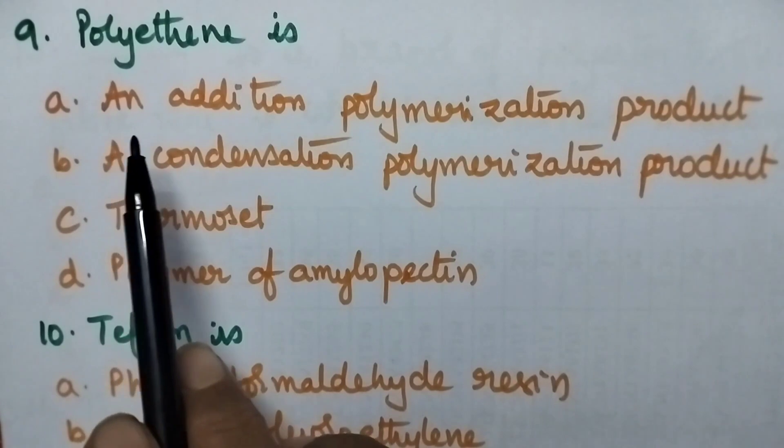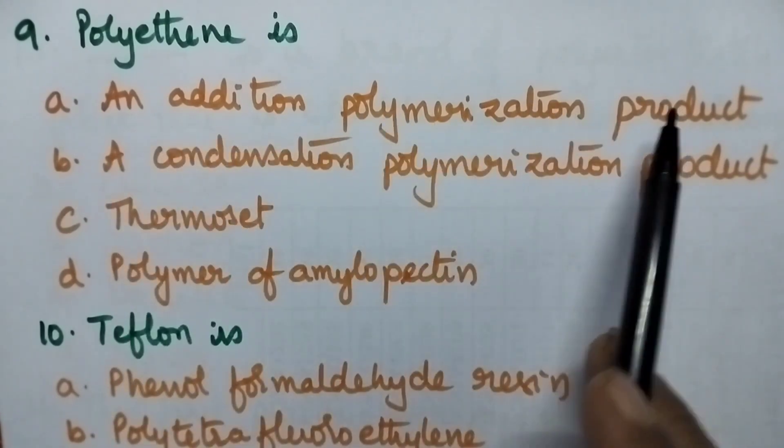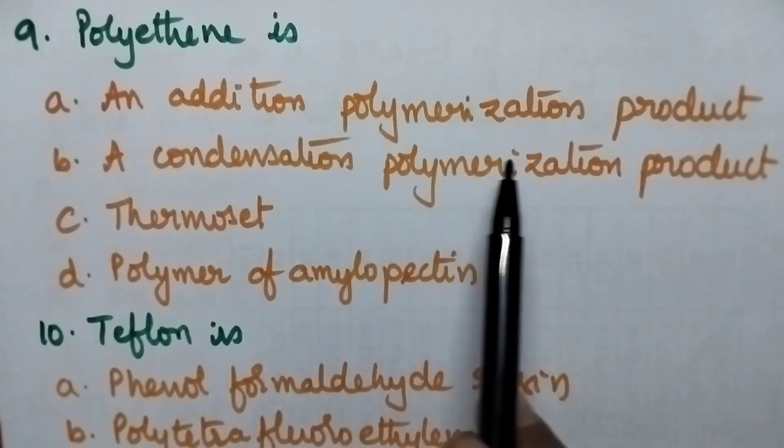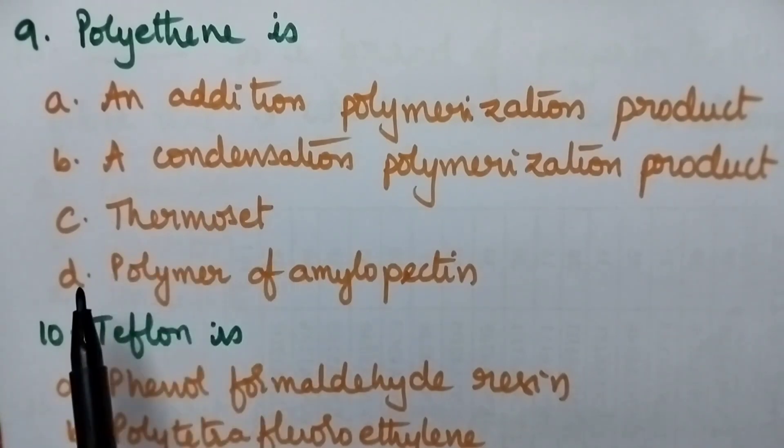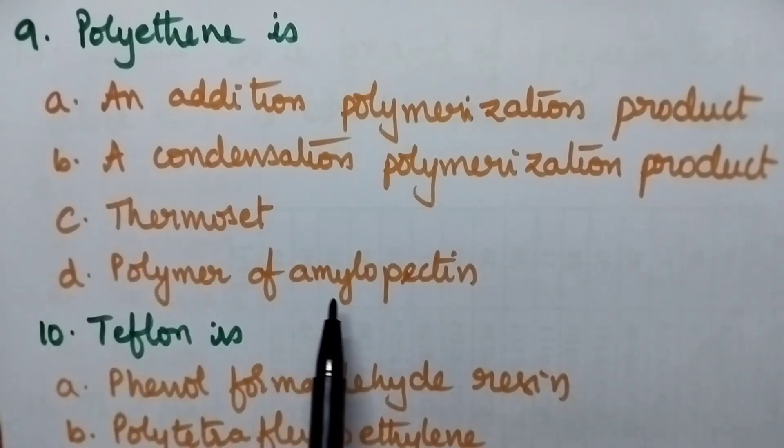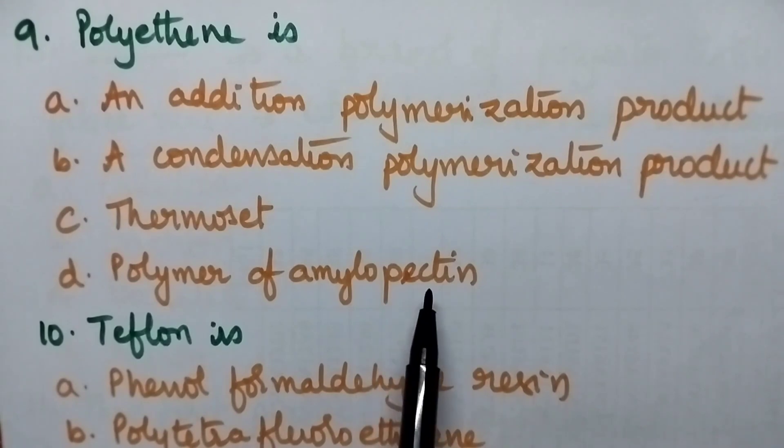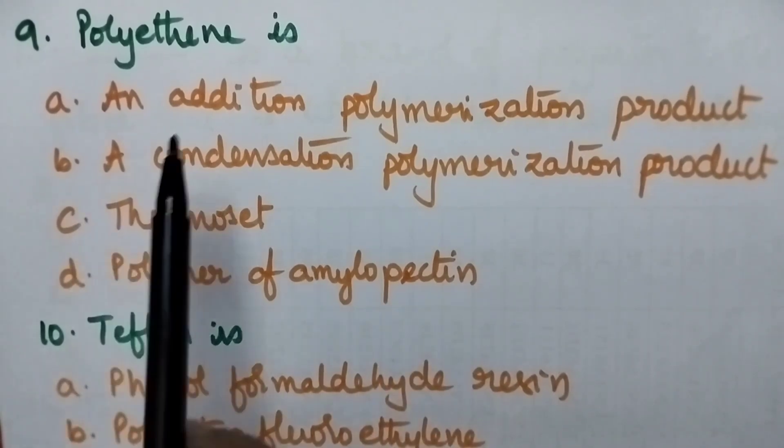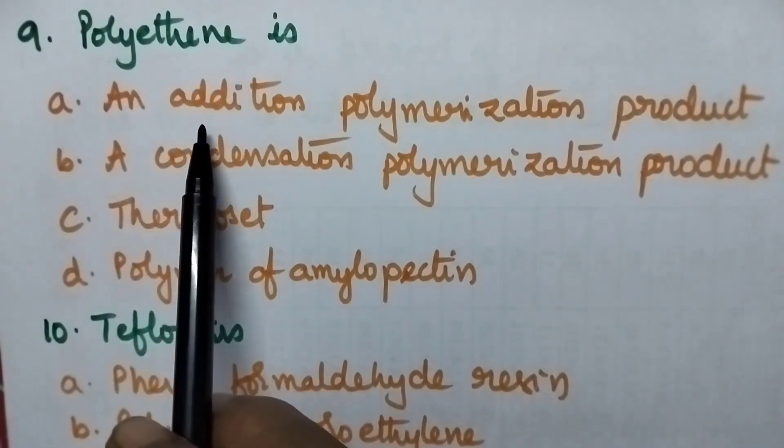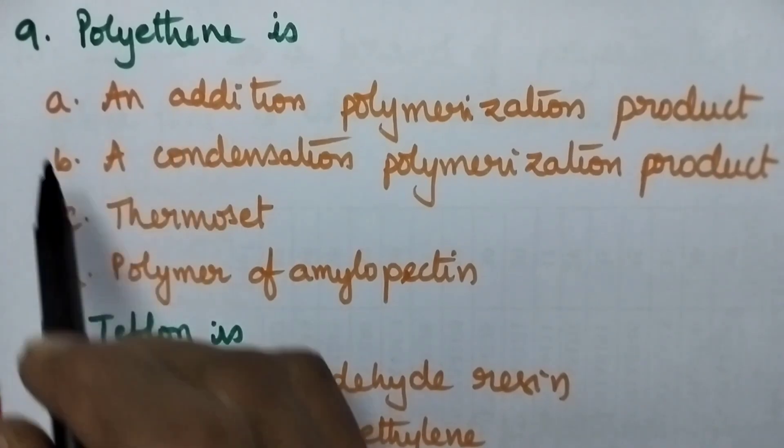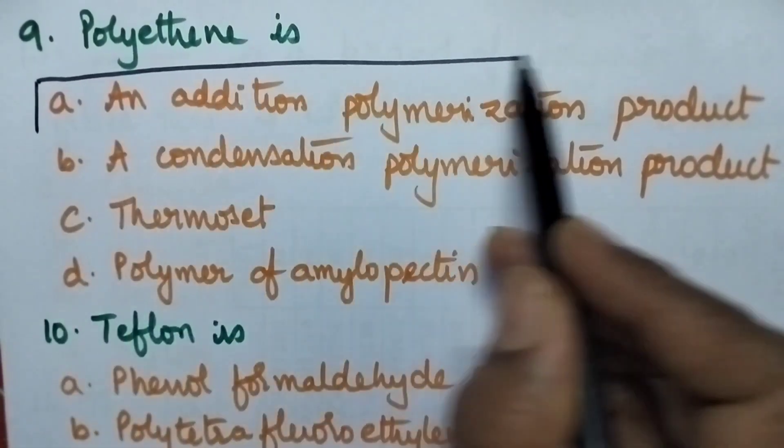Polythene is? A. An addition polymerization product. B. A condensation polymerization product. C. Thermosetting, D. Polymer of amylopectin. Polythene is an addition polymerization product. So option A is the right answer.